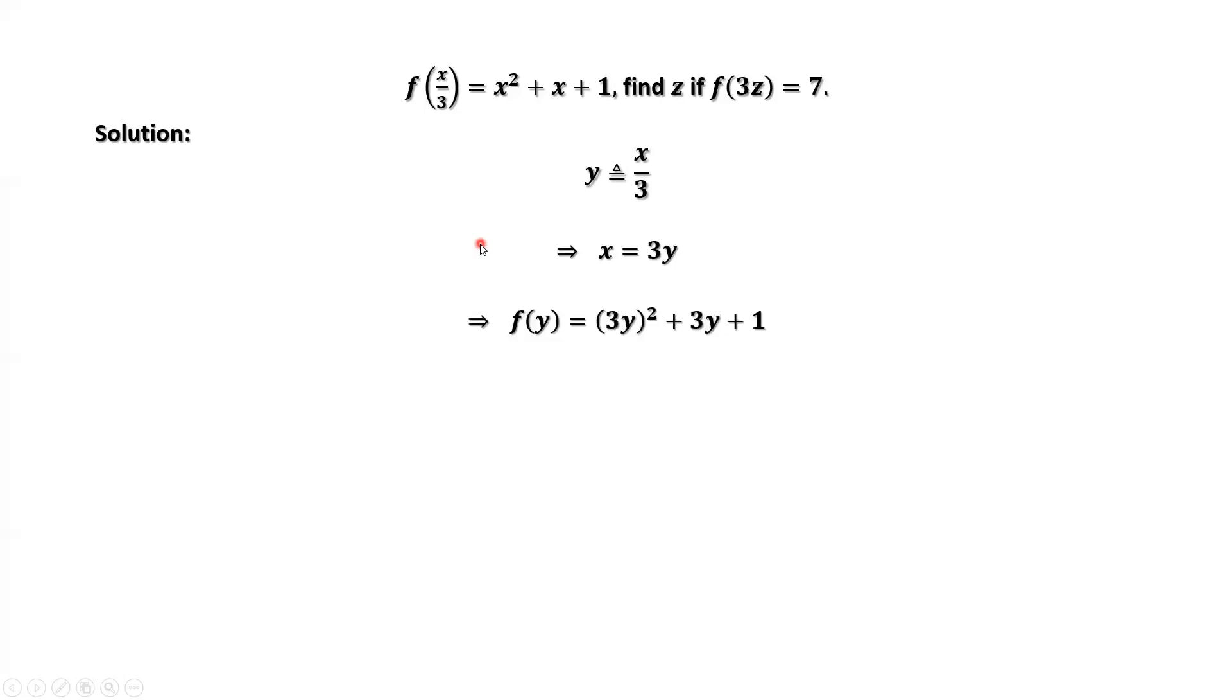Simplify the right-hand side. We have 9y squared plus 3y plus 1.